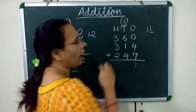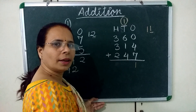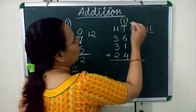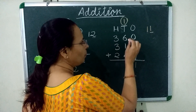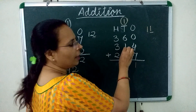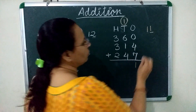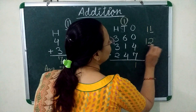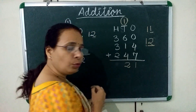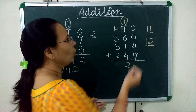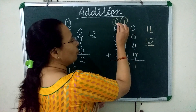Now we will add all the numbers at the 10's place. 1 plus 6 is 7, 7 plus 1 is 8, and 8 plus 4 is 12. We will write 2 at the 10's place and carry 1 over to the 100's place.